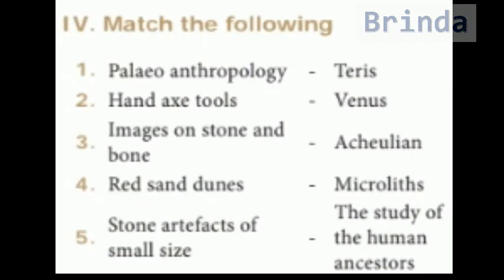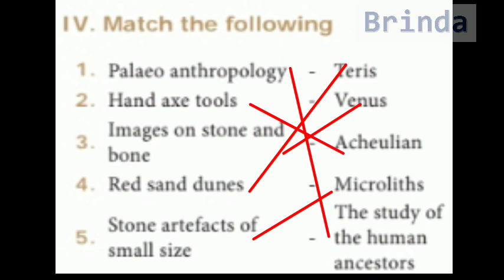Match the following. Paleoanthropology — the study of human ancestors. Hand axe tools — Acheulian. Images on stone and bone — Venus. Red sand dunes — Terries. Stone artifacts of small size — Microliths.